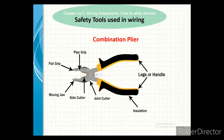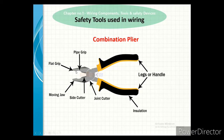Different parts of the combination plier: the legs or handle, the insulation covering, the joint cutter which is used for cutting wires, the side cutter for cutting, the moving jaw, the flat grip, and the pipe grip. The flat grip is used for flat objects and the pipe grip is used for pipe-shaped objects.